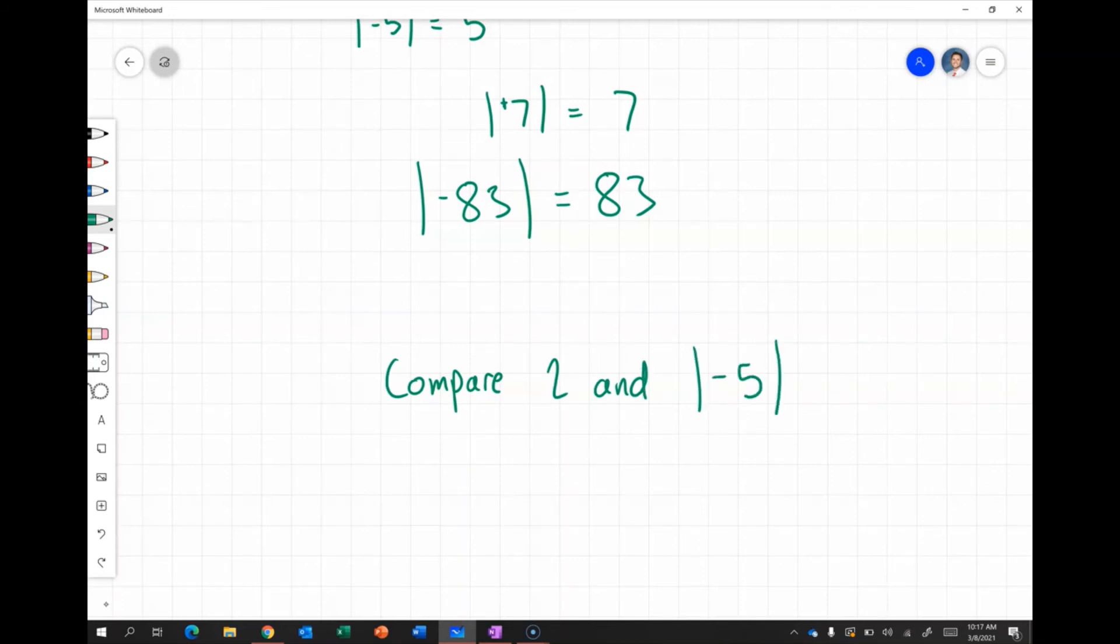Well, we know that the absolute value of negative five would be five. So we're comparing 2 and 5, and we know that 2 is less than 5.